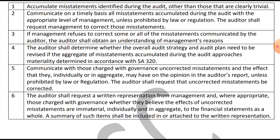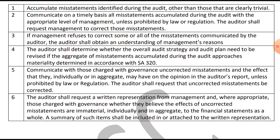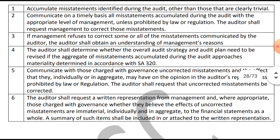This applies if the aggregate of the misstatements accumulated during the audit approaches materiality, as determined in accordance with ISA 320. So the auditor has to again consider, based on the management's reason, whether the materiality level — which would have been determined at the beginning of the audit — needs to be revised or not.